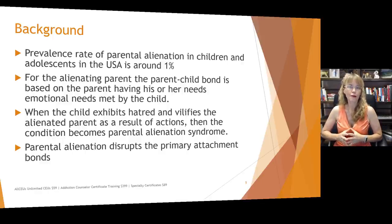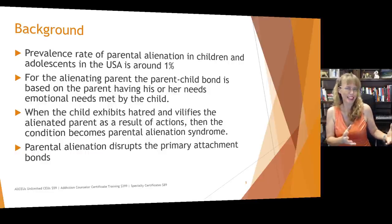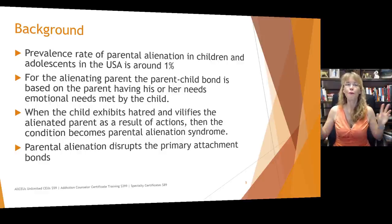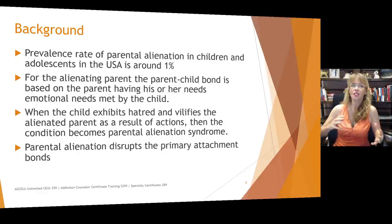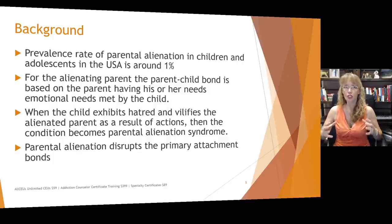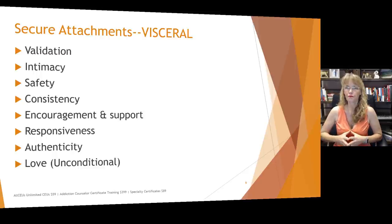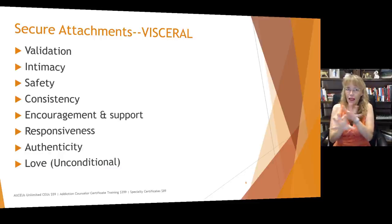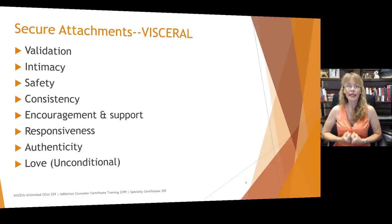Parental alienation disrupts the primary attachment bonds. Children form primary attachment bonds to their main caregivers — plural. So if this is going on in the family, it's going to disrupt one or more of those attachment bonds. In order to have a secure attachment, what children need in relationships can be categorized using the mnemonic VISCERAL — which is easy to remember because from a visceral, gut standpoint, these are the things we need in order to feel secure.